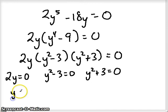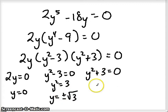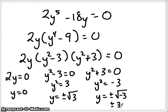This, if we divide by 2, y is 0. If we add 3, then y squared is equal to positive 3. And if we square root both sides, y is equal to plus or minus the square root of 3. Over here, if we subtract 3, then y squared is equal to negative 3. And if we square root both sides, we get plus or minus the square root of negative 3. So that is plus or minus square root of 3 i.